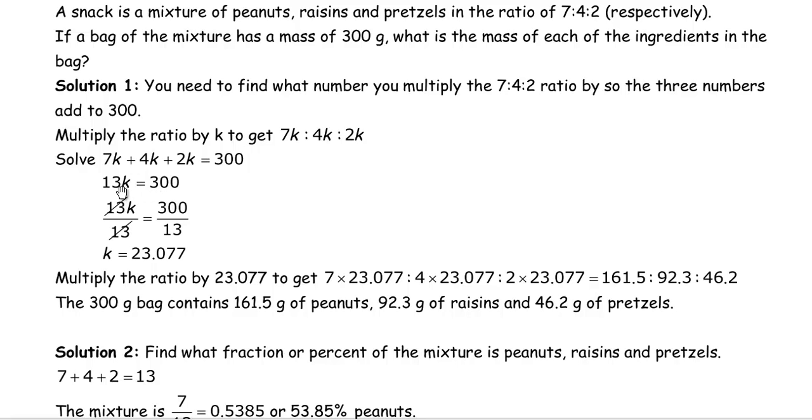And I want to isolate for k here. So the 13 is multiplied by the k, so we undo multiplying by 13 by dividing by 13. That's what this next line shows. So the 13k is being divided by 13, and the 300 is also divided by 13. Remember, you have to do the same thing to both sides. We can't divide the left by 13 but not the right. And so the 13s divide out to give us just k. And 300 divided by 13 is 23.077.